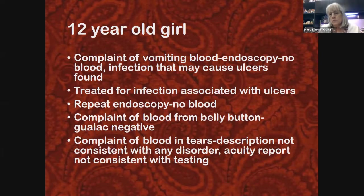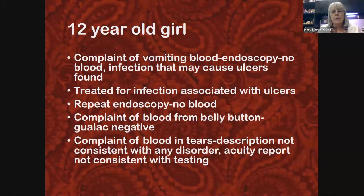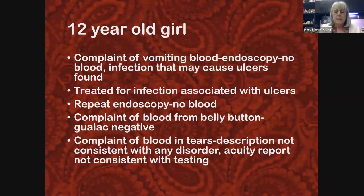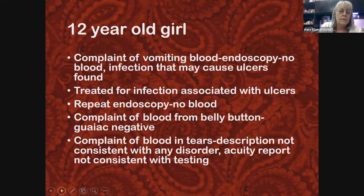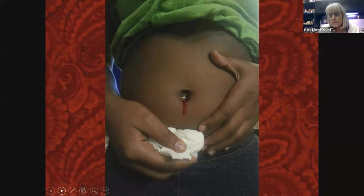She had an endoscopy and there was no evidence of blood, though there was evidence of a Helicobacter infection — not the common one that causes ulcers, but another one — so she was treated for that. She had another endoscopy, and during neither procedure was there any indication she actually had bleeding in her GI tract. The next complaint was bleeding from her belly button.